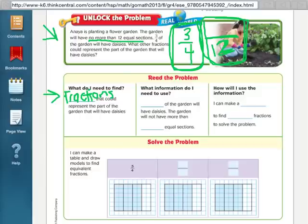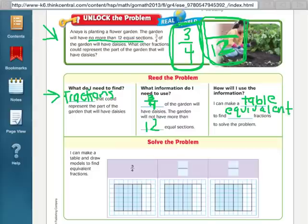So the information that I need to use is the 3 fourths of the garden will have daisies, and we will not have more than 12 equal sections. So our strategy today is make a table to find equivalent fractions to solve the problem.